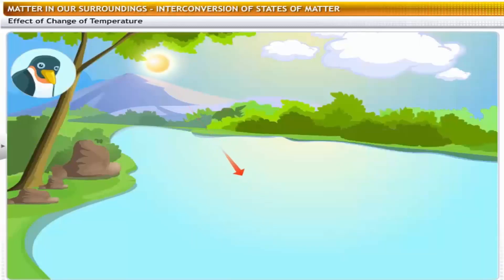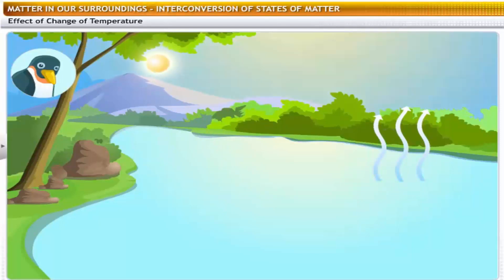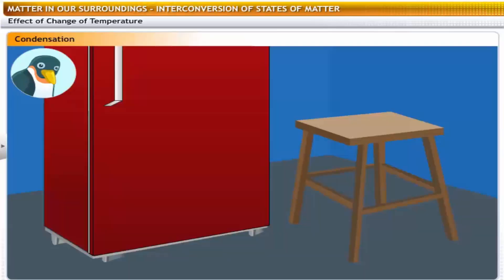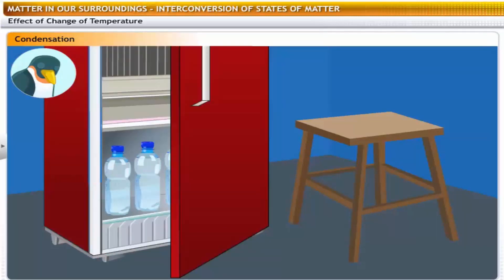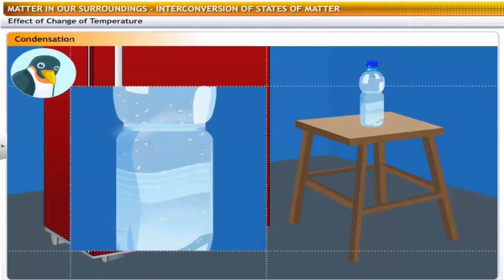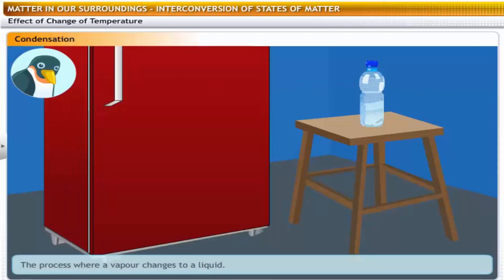You know that water evaporates, but what happens after evaporation? The water vapor condenses and we receive the same water in the form of rain. Let's study this phenomenon with an example from everyday life. Take an ice cold water bottle and leave it on the table for two minutes. Observe water droplets on the outer surface of the bottle. These water droplets are condensed water vapor present in the air around the cold bottle. The process where a vapor changes to liquid is called condensation.